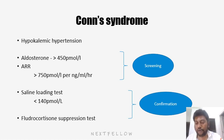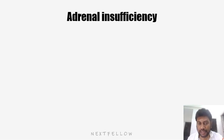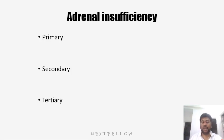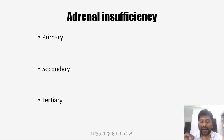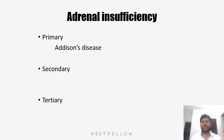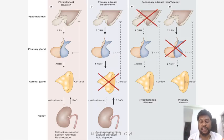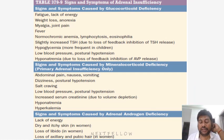Next, we will move on to decreased production of hormones, which we see in adrenal insufficiency. Adrenal insufficiency can be broadly classified into three types: primary, secondary, and tertiary, based on the site of lesion. If the lesion is in the adrenal gland, it is called primary adrenal insufficiency. If the problem is with the pituitary, we call it secondary. If it is with the hypothalamus, we call it tertiary. The most common adrenal insufficiency is due to primary disorder, also called Addison's disease. Whenever a patient comes with symptoms of adrenal insufficiency, first you should confirm the diagnosis.